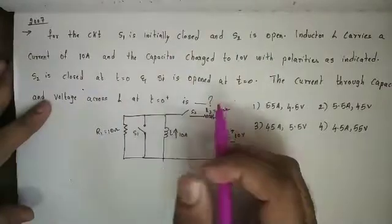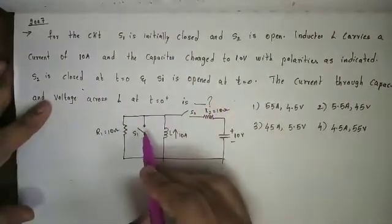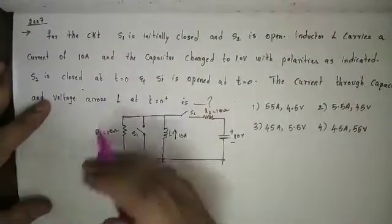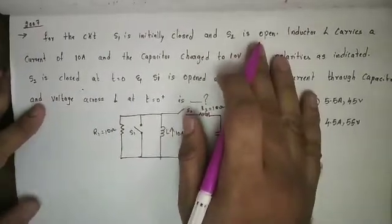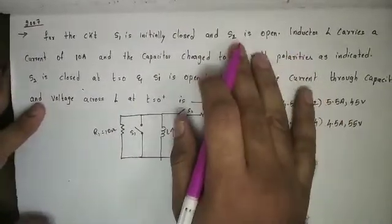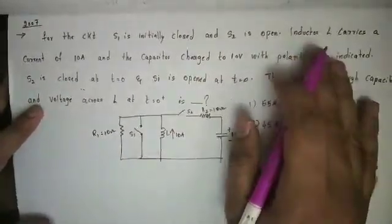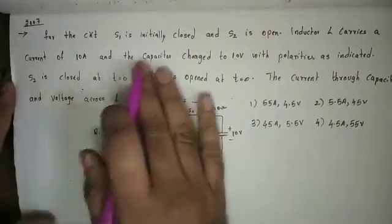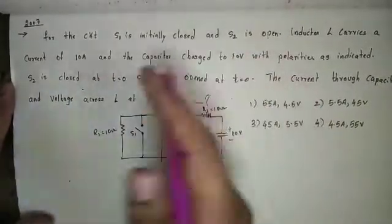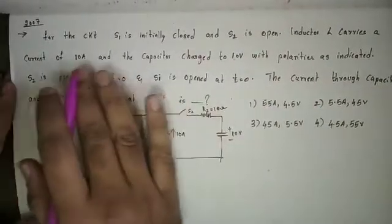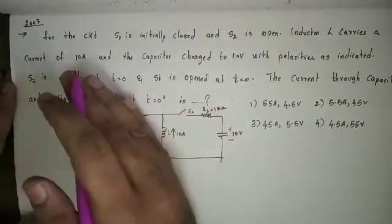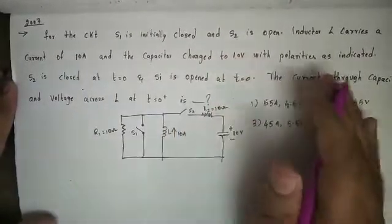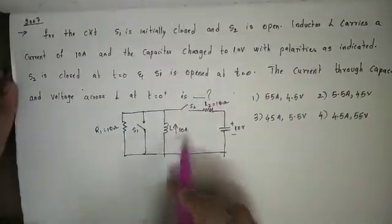For the next circuit: S1 is initially closed, and in the past S1 has been closed. S1 automatically opens and S2 is open. The inductor carries a current of 10A and the capacitor is charged to 10V. Initial conditions: the inductor has a current and the capacitor has a voltage, with polarities as indicated.